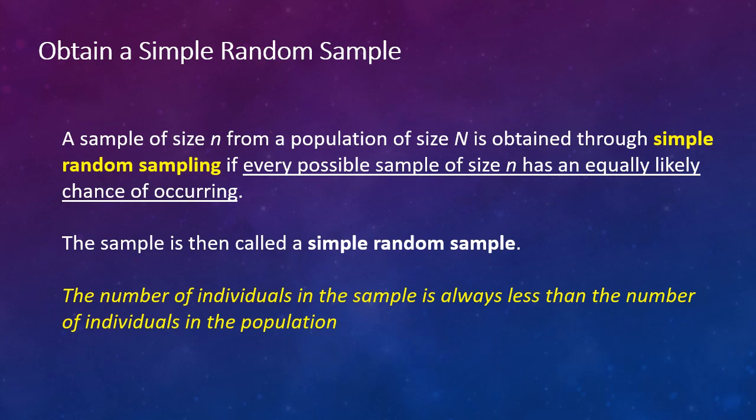So let's look at some more information about obtaining a simple random sample. A sample of size lowercase n from a population of size uppercase N is attained through simple random sampling if every possible sample of size n has an equally likely chance of occurring. So again what we're talking about here is an overall population of people with this characteristic would be the uppercase N, or that's how many people. So let's just say that's a population of 100,000 and we want a sample size say of 100 people. Well, if every grouping of 100 different people has an equal likelihood chance of occurring, then it's simple random sampling.